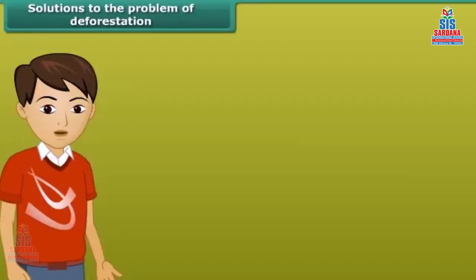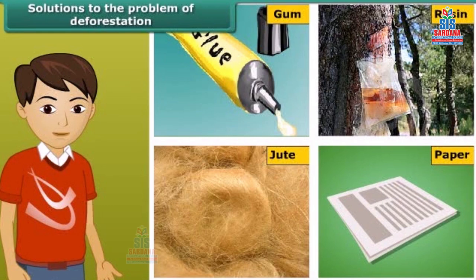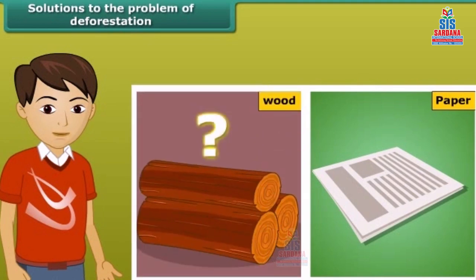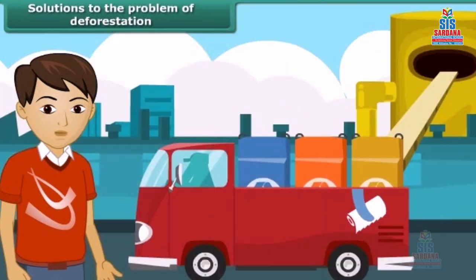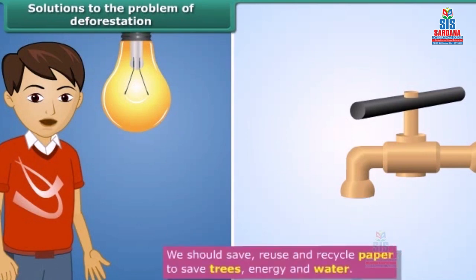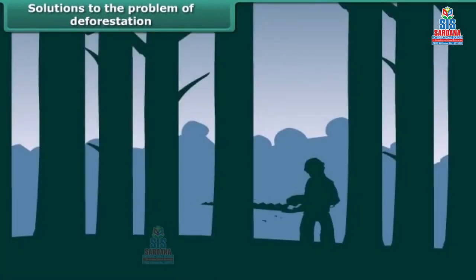We get many things from forests — gum, resin, jute, and paper are important products. Can you think of any alternatives available for paper? What would happen if we had no wood? Recycling of paper is the simple answer. Paper can be recycled five to seven times for use. By recycling paper, not only the trees but also energy and water could be saved. Thus we should save, reuse, and recycle paper.